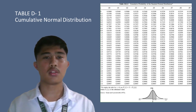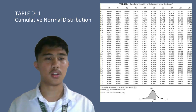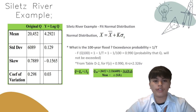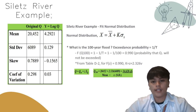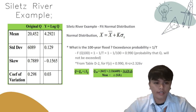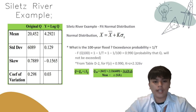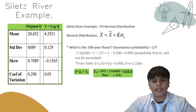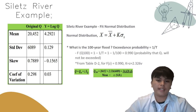The normal distribution table (Table D-2) and the cumulative normal distribution table are where you can find the frequency factor k. In the Sillets River example, the normal distribution is fitted to streamflow data to estimate flood probabilities and return periods. The data set includes the mean streamflow, standard deviation, skewness, and coefficient of variation. Using these statistics, the 100-year flood (exceedance probability 0.01) is estimated using a standard normal distribution table with a z-value of 2.326, yielding an estimate of 34,628 CFS.